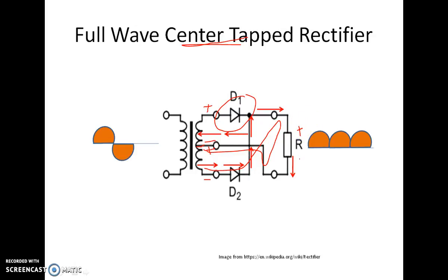Observe that in both the cycles the current flowing through the resistance or the load is in same direction and hence you have the output in the same direction.